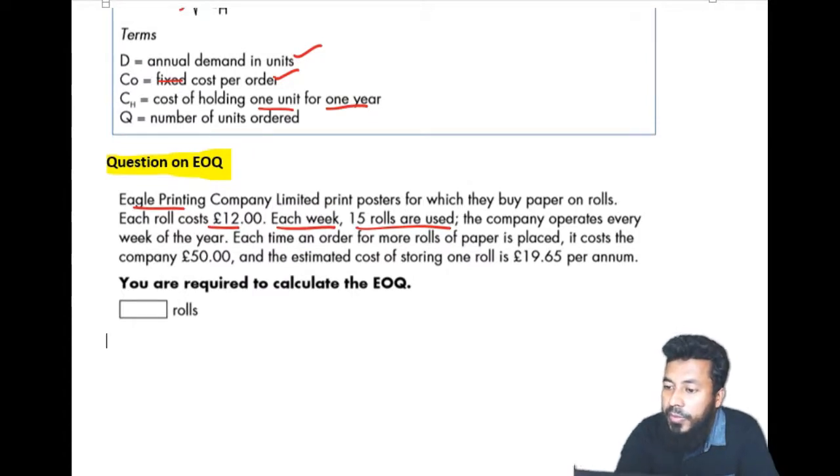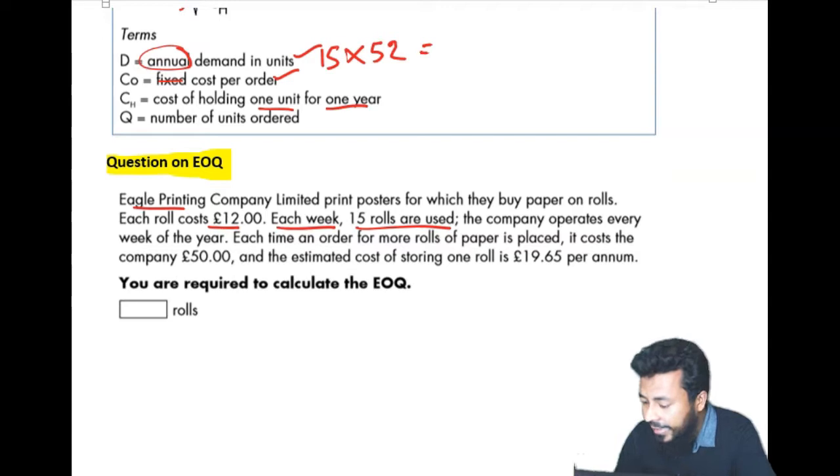So 15 rolls times by how many weeks in a year? Because the demand is annual demand, remember? 52 weeks. So if I get the calculator, 15 times by 52, it says 780. 780 rolls demand.